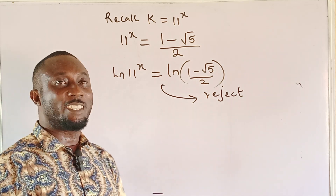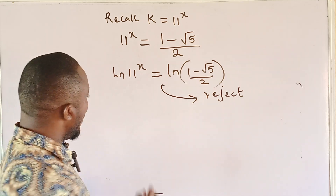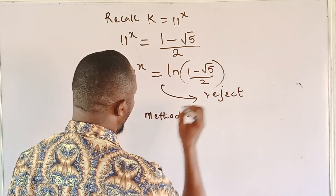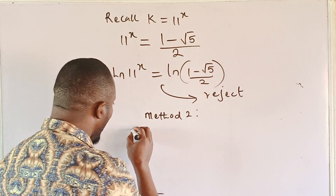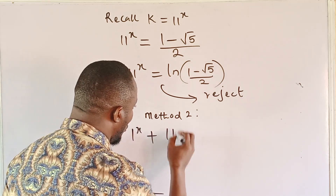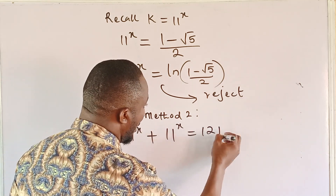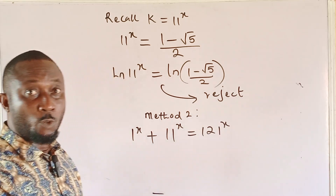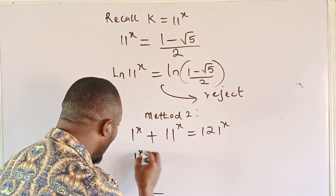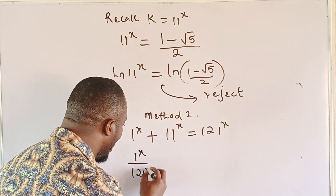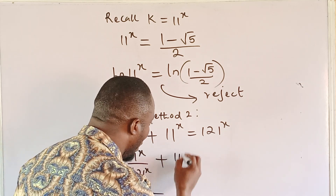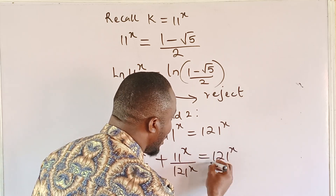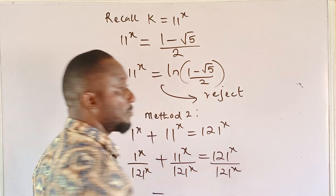The second method is rather very simple. Method 2. We are going to do some basic division of exponents — dividing both sides by 121^x. So we get 1^x divided by 121^x, plus 11^x divided by 121^x, equals 121^x divided by 121^x.